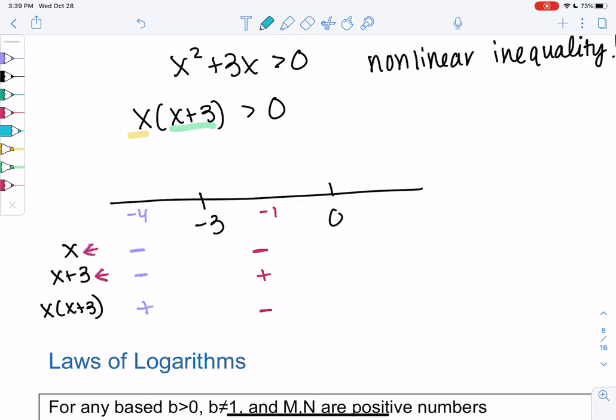This is way back in chapter 1 if you need to review. And then we'll try 1 in that last interval. So 1 is positive. 1 plus 3 is positive. Combine them and it's positive.